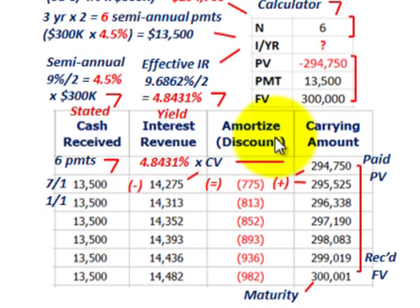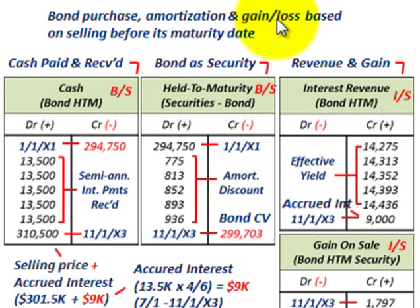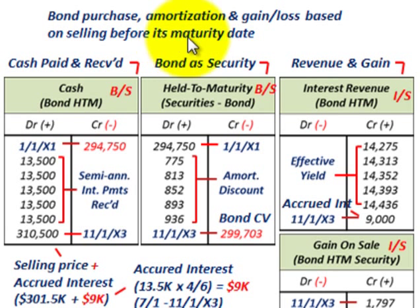Let's look at how we'd record this. We're going to look at the bond purchase, the amortization, and in this case a gain or loss based on selling it before its maturity date. The bond was classified as a held-to-maturity investment, but we're going to get away with it here because it's sold just two months before it matures. We can still classify it as held-to-maturity as long as we hold it until it almost matures.